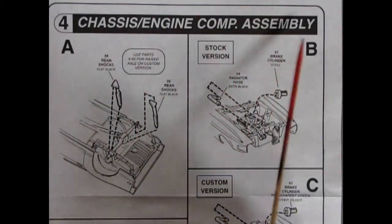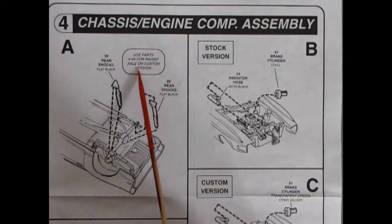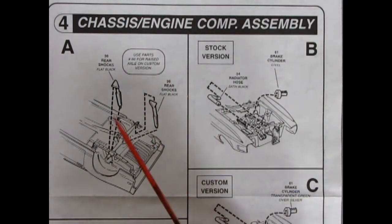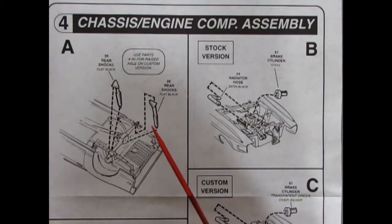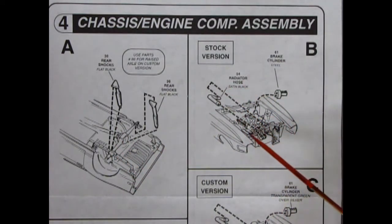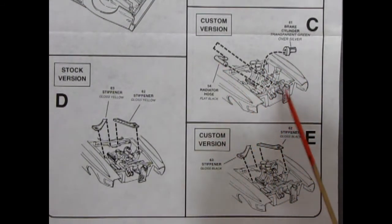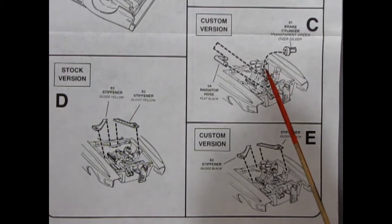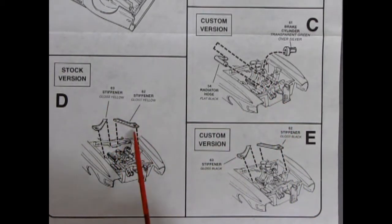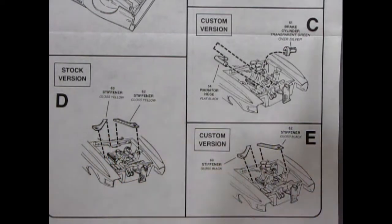Step four is our chassis engine compartment assembly. It says use parts number 86 for a raised axle on custom version. Our shock absorbers will come into the back here. And these ones, I do believe, are staggered. So you've got one in the back, one in the front. Then we've got our radiator hose going on top of the engine. And our brake cylinder going in here. And then step C is our custom version, which is basically the same thing. Radiator hose going into the radiator and the top of the engine. And then our master cylinder gluing in back behind. The only difference is the high-rise intake engine, which is displayed there. And then we have these stiffeners, which are going up on top of the shock towers and into the firewall. Same with the custom version. Just showing you a different engine.